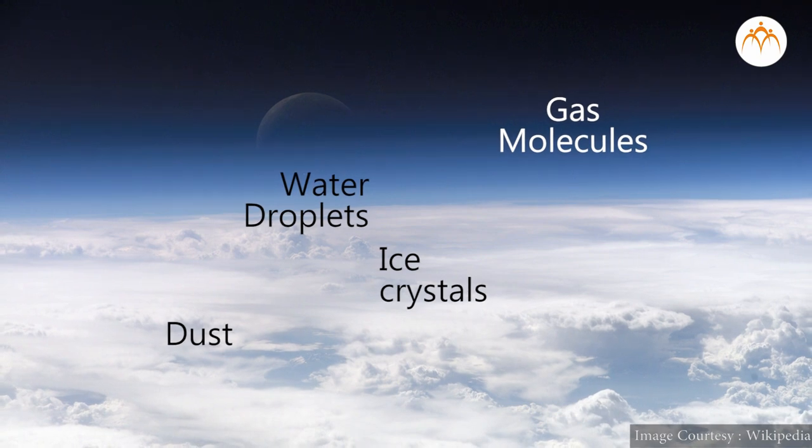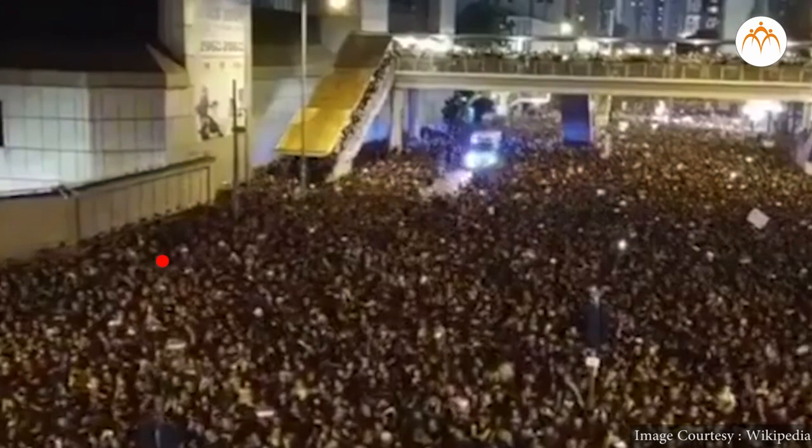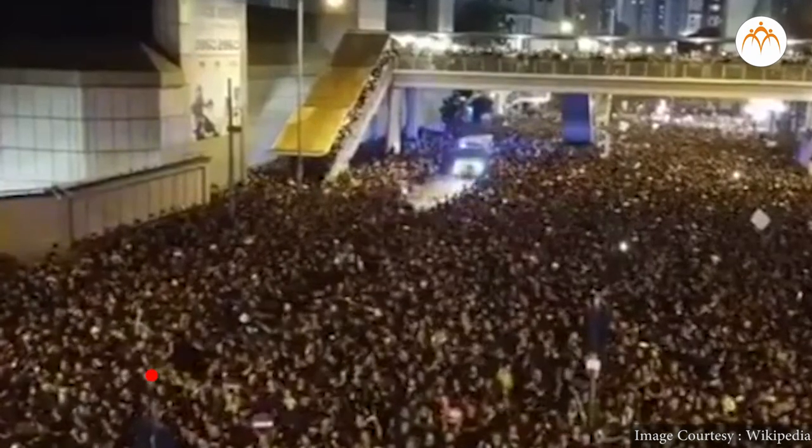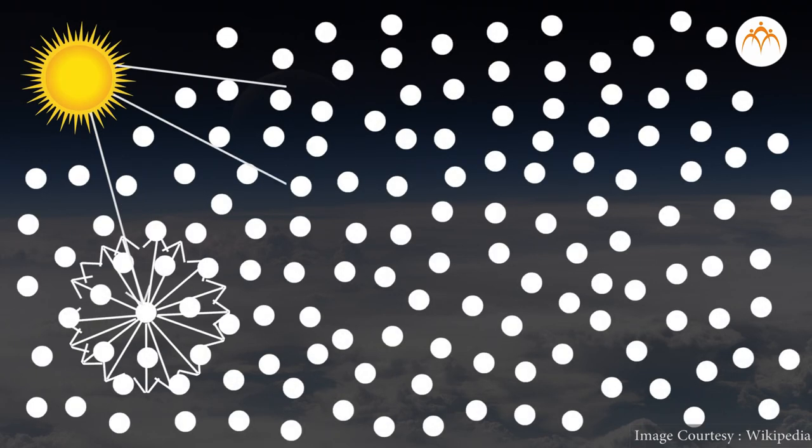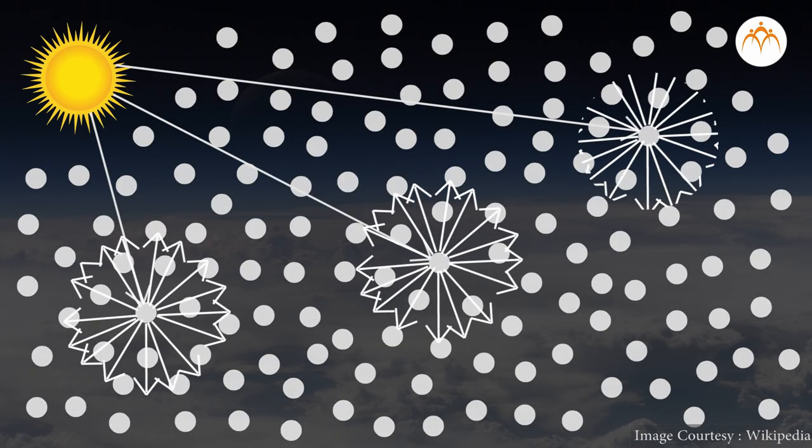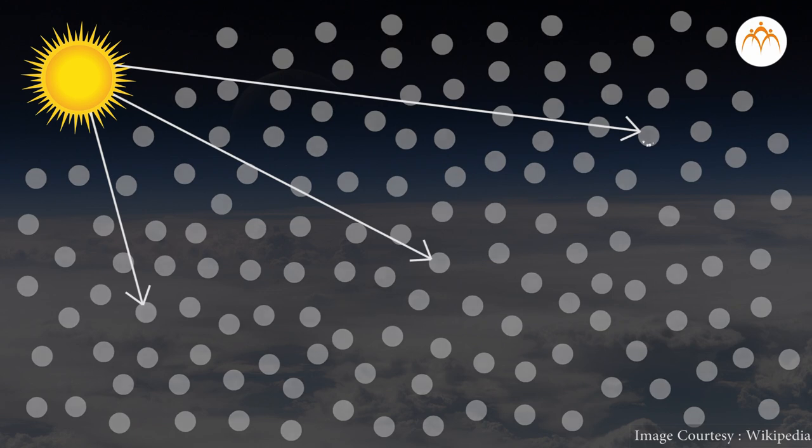The light waves bounce off these particles just like you might collide and bounce in some direction in a crowded place. As the light waves bounce in lots of different directions, we say they have been scattered.